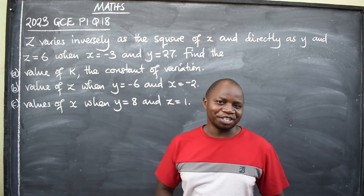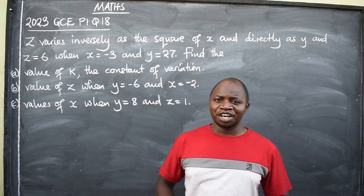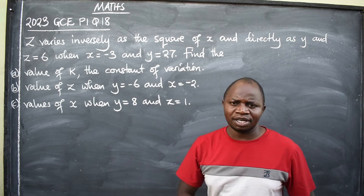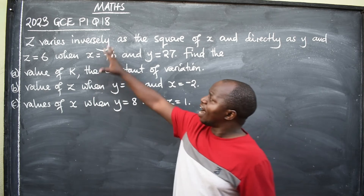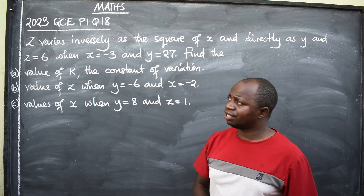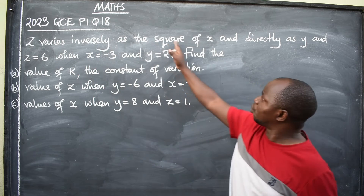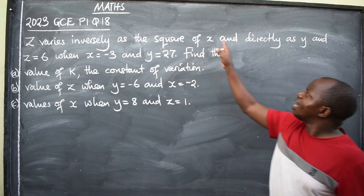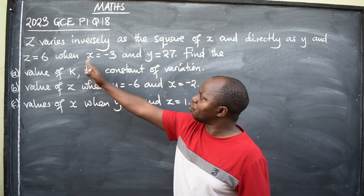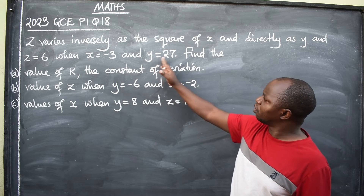Greetings ladies and gentlemen, this is mathematics. In this video we want to look at a question coming from the 2023 GCE paper 1, question number 18. The question reads: Z varies inversely as the square of X and directly as Y, and Z is equal to 6 when X is equal to negative 3 and Y is equal to 27.